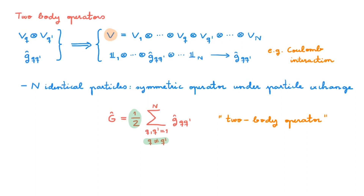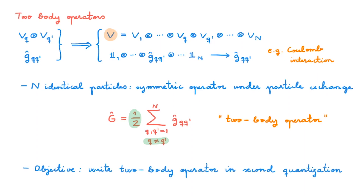Similar to what we saw for one-body operators, working with two-body operators in first quantization leads to a very large number of terms, making mathematical manipulations cumbersome. Therefore the objective of today's video is to write a two-body operator in second quantization, in terms of creation and annihilation operators. Today's derivation is much simpler than that for one-body operators because it builds on those results. Instead of dealing with symmetrized and anti-symmetrized tensor products, today we deal directly with creation and annihilation operators, which is great practice for working in second quantization.